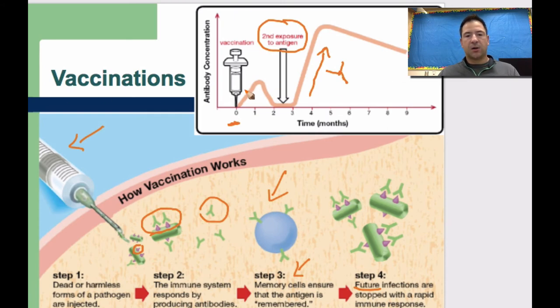But vaccinations are dead or a weakened or harmless pathogen injected into the body so that the immune response initiates to produce antibodies. So then in any second exposure it initiates a rapid immune response to slow down and destroy that pathogen.